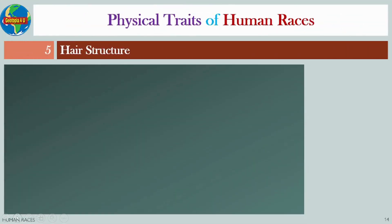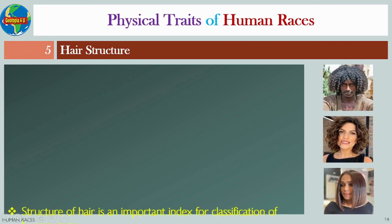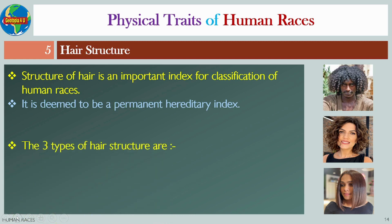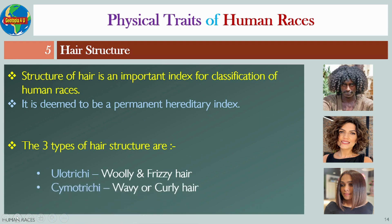Number five: Hair structure. The structure of hair is an important index for classification of human races and is deemed to be a permanent hereditary index. The three types of hair structure are: ulotrichy, which means woolly and frizzy hair; cymotrichy, which means wavy or curly hair; and leiotrichy, which means straight hair.